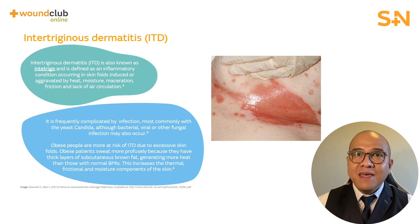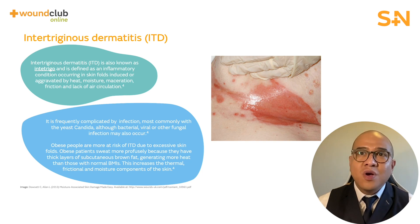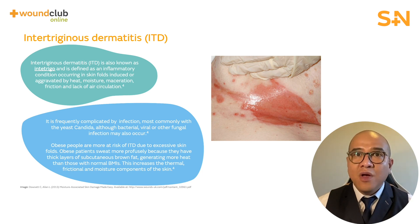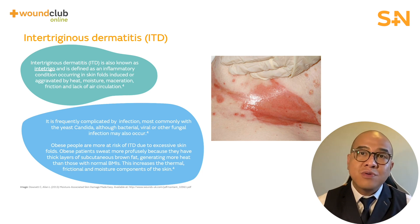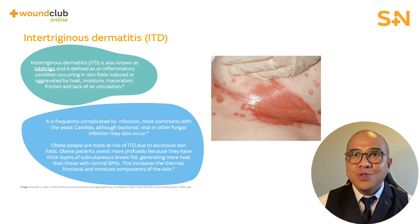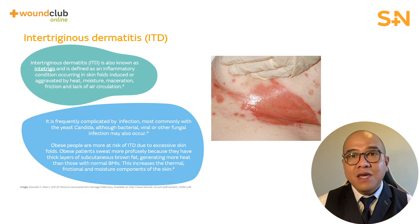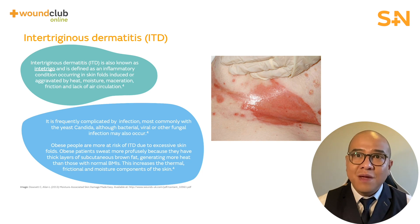Intertrigo is frequently complicated by infection, most commonly with yeast, candida, or bacterial, viral, or other fungal infections. Obese people are more at risk of intertrigo due to excessive skin folds and increased perspiration needed to regulate their body temperature.